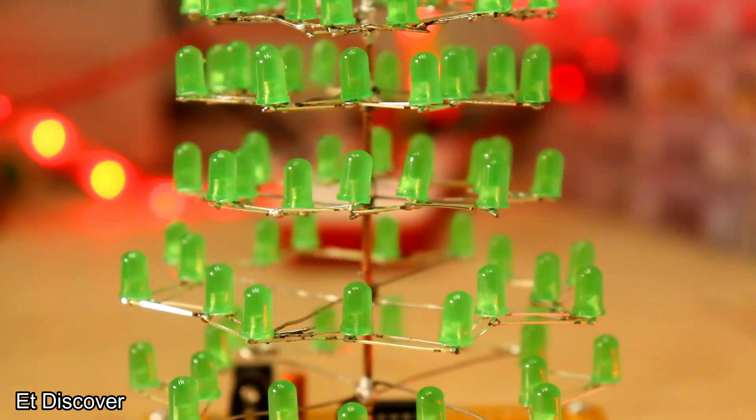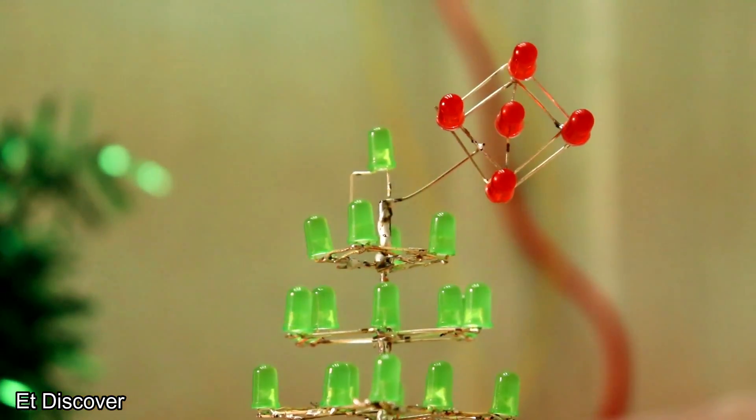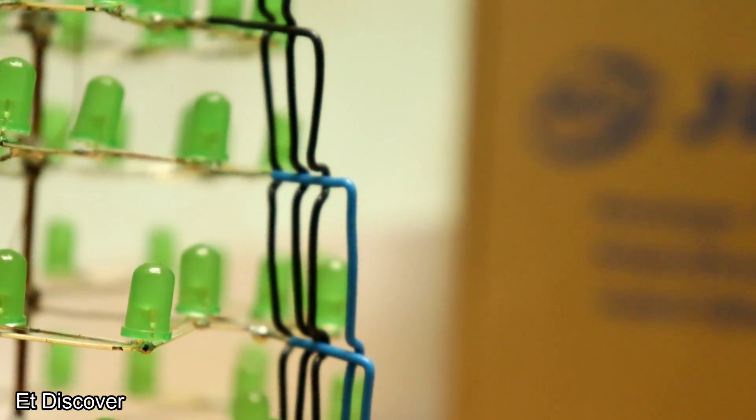And now it is looking like this. And for connection for each layer I used jumper wires. After soldering all the wires it is looking like this.